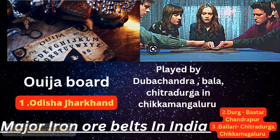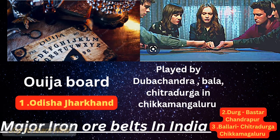To remember the major iron ore belts in India, I have given an image. The first one is 'Oja Board.' Then for the second image, remember it as names of some persons: Duba, Chandra, Bala, Jitra, Durka. We have played this game in Chikmagalur.